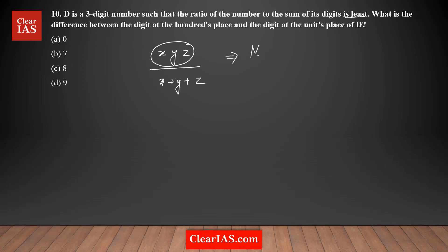To get the minimum value for this ratio, I need to minimize the numerator and I need to maximize the sum — the denominator should be maximum possible. That's how you get the ratio at its minimum value possible.